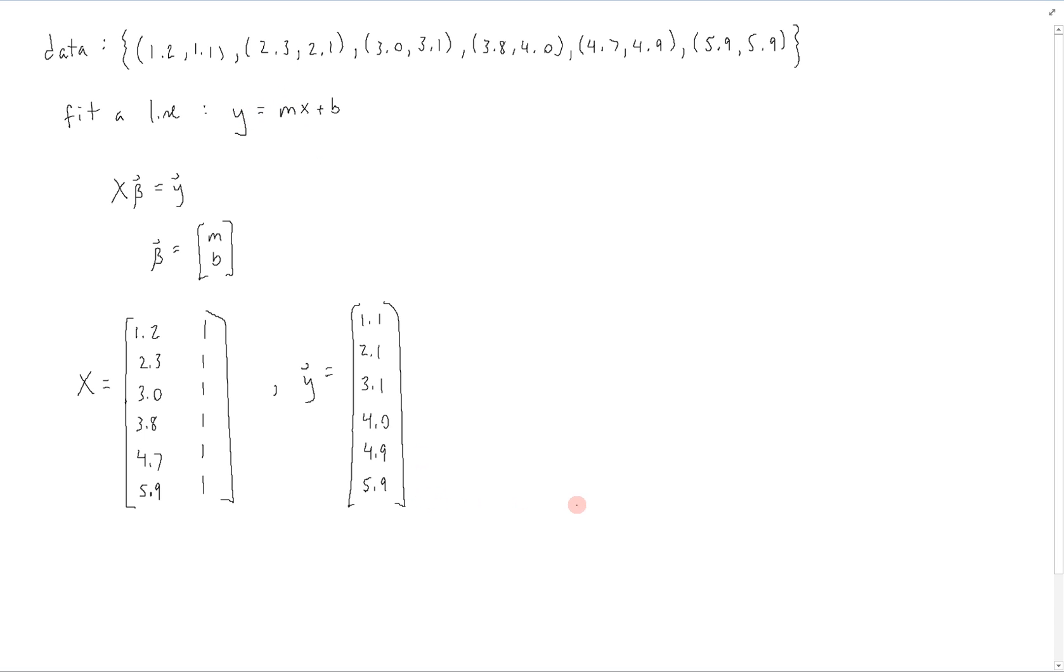So now to solve this, we're going to use our normal equations for least square solutions. So it will be X transpose X times β hat, our best approximation of β, is equal to X transpose y.